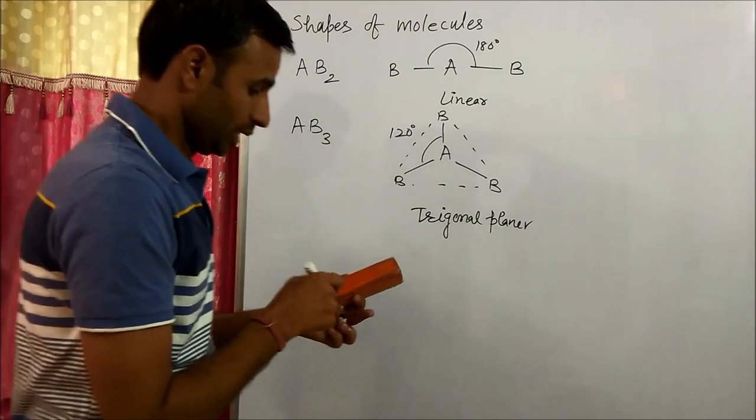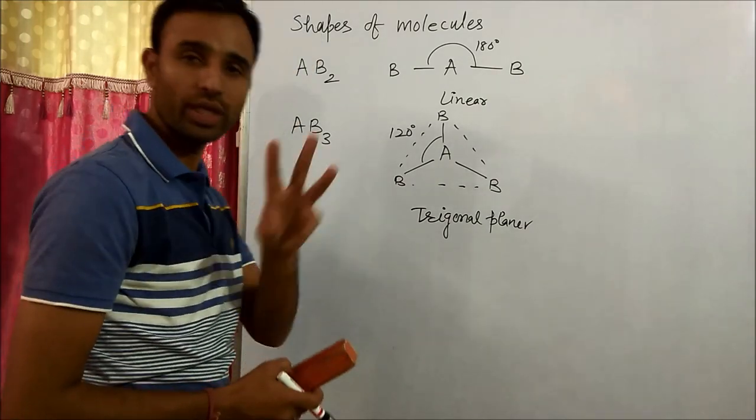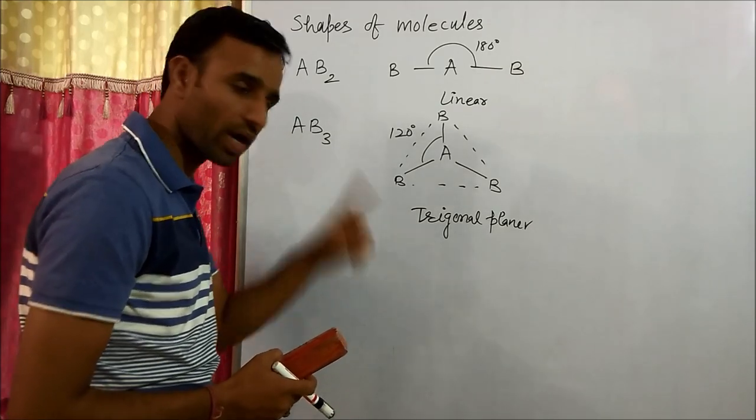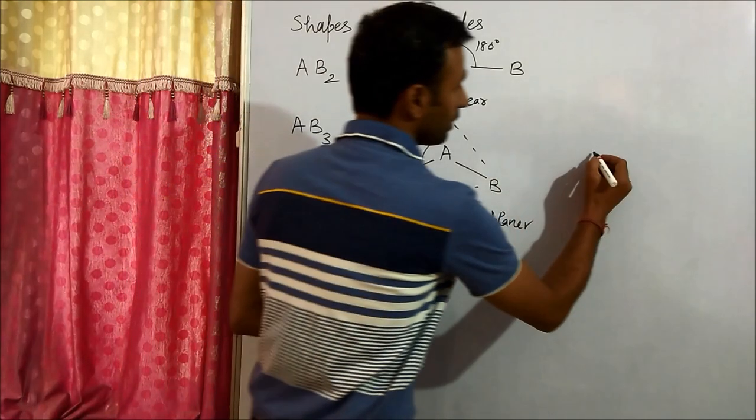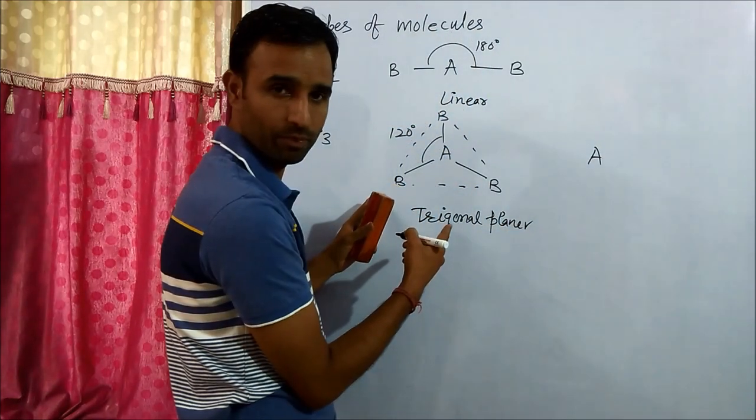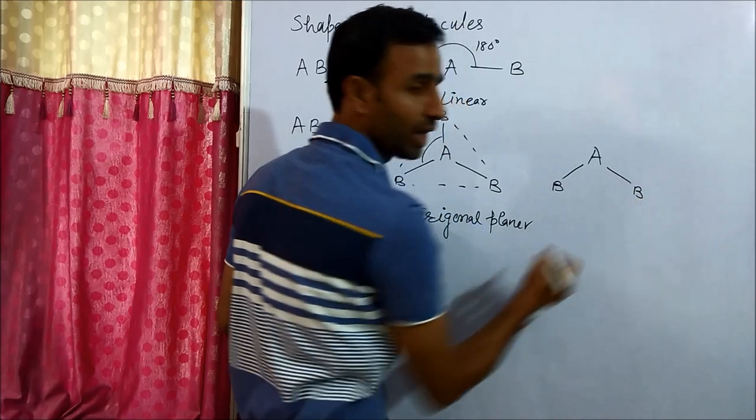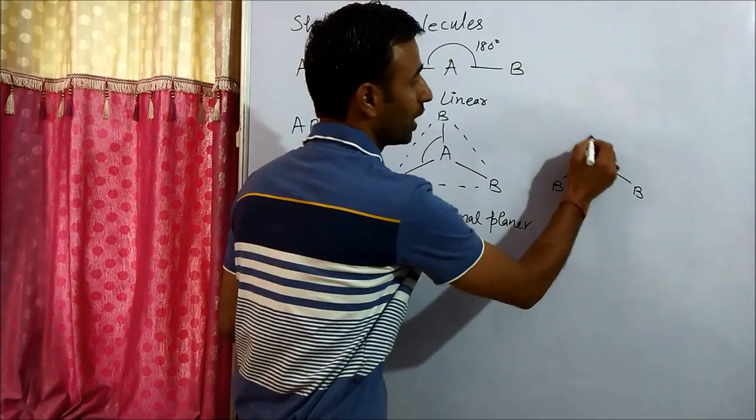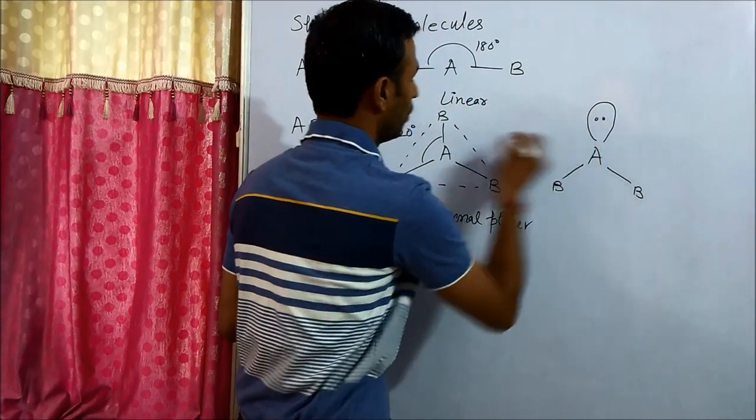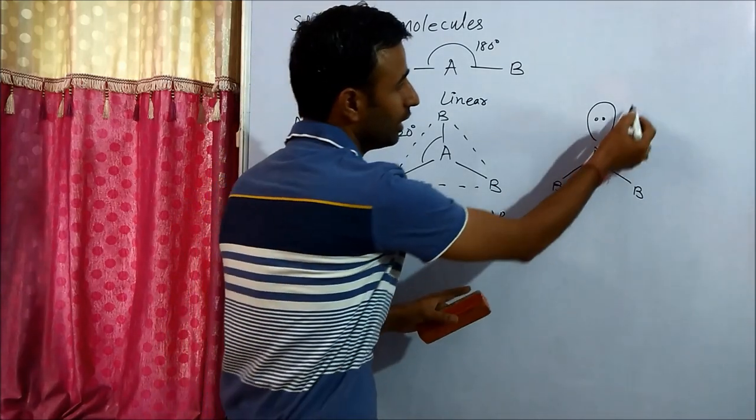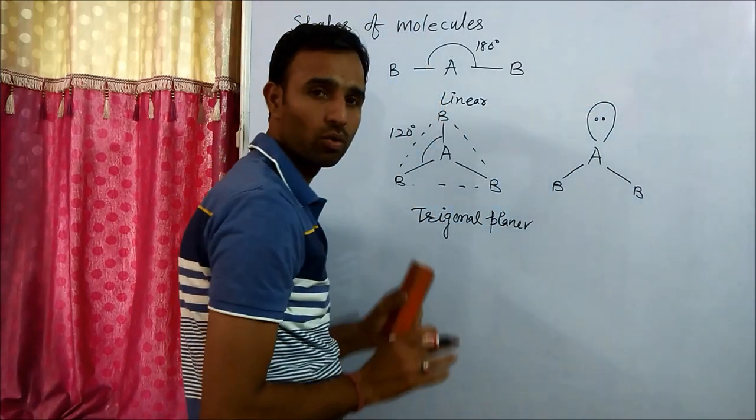Now same case when we have three pairs but two bond pairs and one lone pair. Then see arrangement is same, two bond pairs and we have one lone pair. So one position is occupied by lone pair. Now the shape, see this lone pair is not included in the shape.